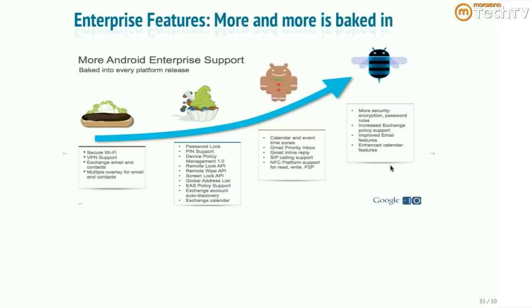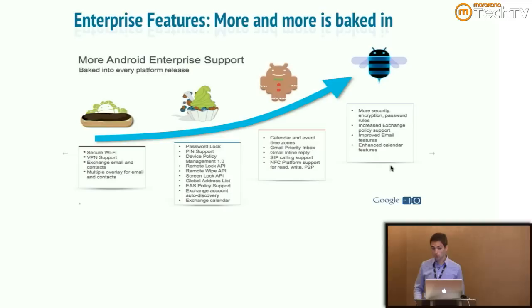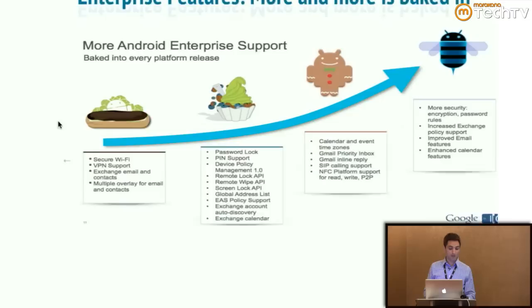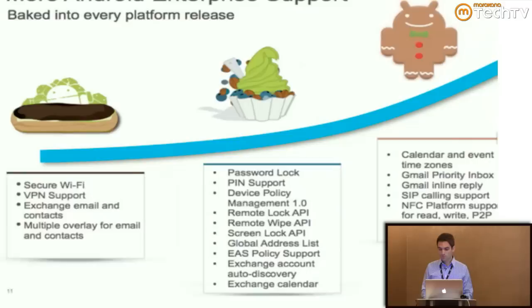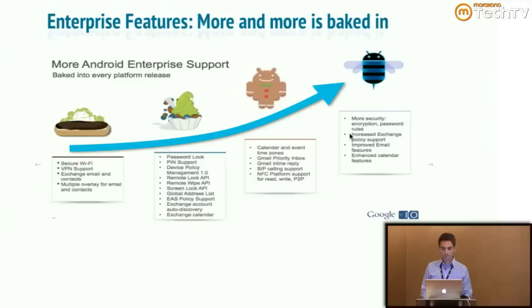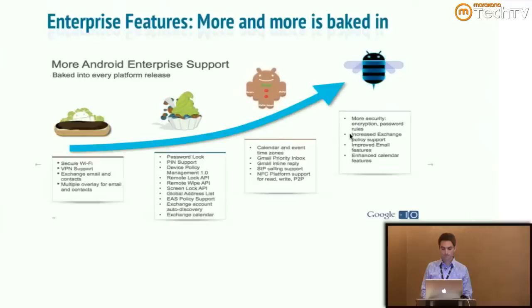Moving to enterprise features that Google has been baking into Android over time. In Eclair they added secure Wi-Fi and VPN. In Froyo they added remote wipe and remote lock. Gingerbread had nothing really significant. In Honeycomb and on, they added full disk encryption. These are the things relevant to the enterprise. Android does have about 55 to 60 services as part of Ice Cream Sandwich — Bluetooth, Wi-Fi, telephony, location, NFC, etc. — all under a system server umbrella.